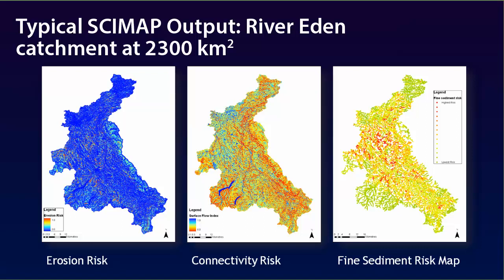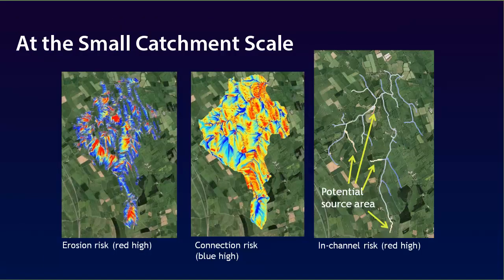It is the red areas where we would want to focus mitigation actions. We can zoom into one of the catchments within the Eden to look at this in more detail. At the small catchment scale, CIMAP is able to show the erosion risk with variations within fields as well as between fields. The map in the centre shows the hydrological connectivity risk, with blue areas indicating areas of high connectivity at the sub-field scale. The map on the right shows that we can identify the potential source areas within this catchment, which may be the key areas contributing diffuse pollution to the river channel.